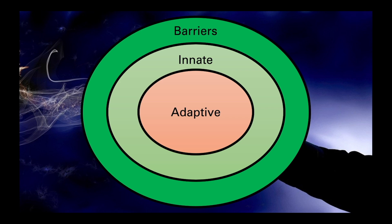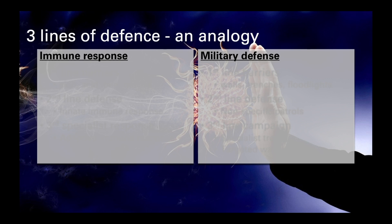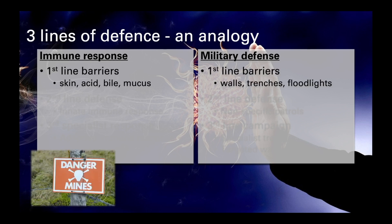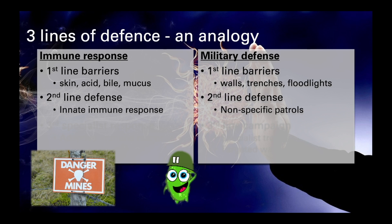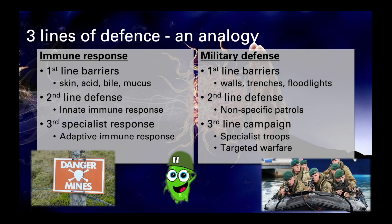We can therefore think of the immune system as a bit like a military defence. The barriers are the equivalents of the minefields, trenches, walls and floodlights that might surround a base. The innate system is the general soldiers and attack dogs that are patrolling the walls of the camp, looking for anything suspicious. And then the adaptive system is the elite troops, especially trained to carry out highly specific missions with a great degree of skill and precision. Each one of these different components and the underlying network of communication and support structures plays a vital role in defending the base, and they cannot work effectively without one another.